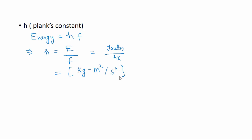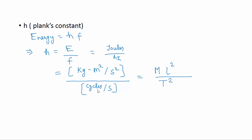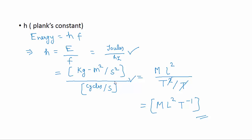For h = E/ν: energy in base units is kg·m²/s², and frequency is cycles/s (cycles have no dimension). So h = (kg·m²/s²) / (1/s). Writing dimensions: kg → M, m² → L², s² in denominator; one T cancels with the frequency denominator, giving dimension of Planck's constant as M·L²·T⁻¹.